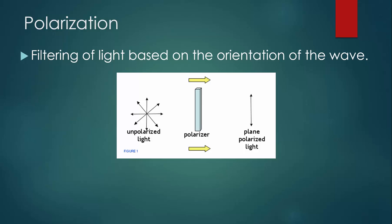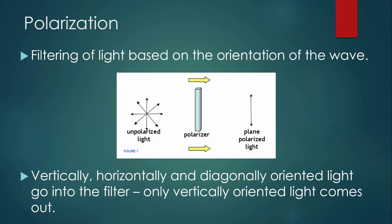Light from something like the sun or a light bulb comes at us in all different orientations. Some light is vertical, some is horizontal, some is diagonal. You can use a polarizer to eliminate all but one of those orientations. This diagram shows that. We have vertically, horizontally, and diagonally oriented light going into the filter and only vertically oriented light coming out.